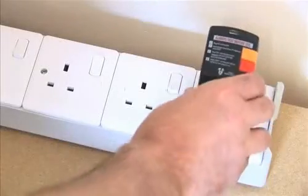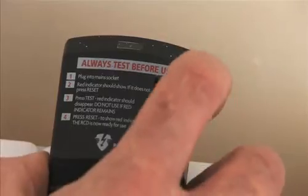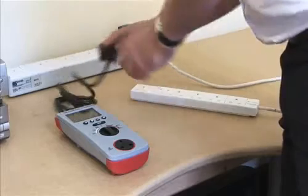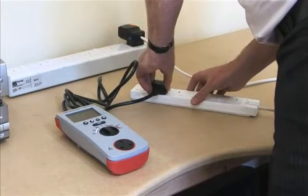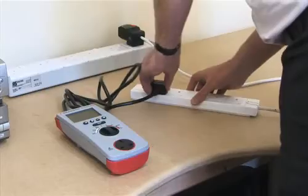The RCD is plugged into a mains outlet and reset. The PrimeTest 220 is connected to the multi-way adapter by plugging the PrimeTest mains cord into a mains outlet.